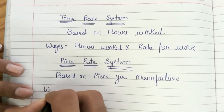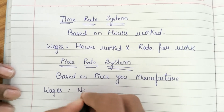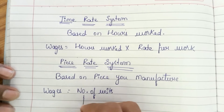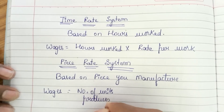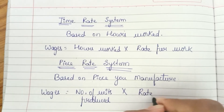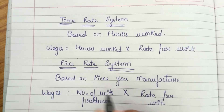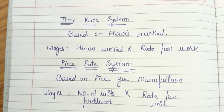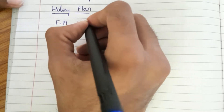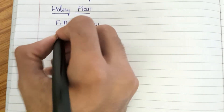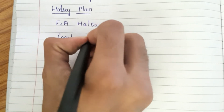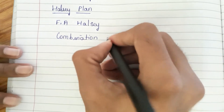The formula for piece rate is: number of units produced multiplied by rate per unit. They would have told that for one unit we will pay this much amount, and based on the number of units you have produced, they will pay a certain rate. Next we have the Halsey plan, introduced by F.H. Halse. The Halsey plan is a combination of both time rate as well as piece rate.